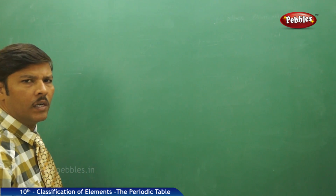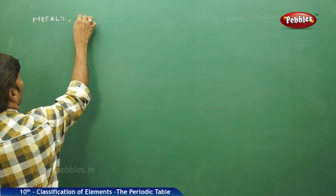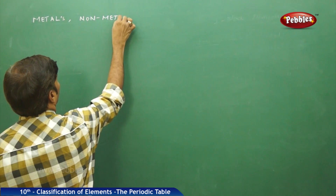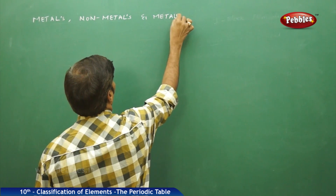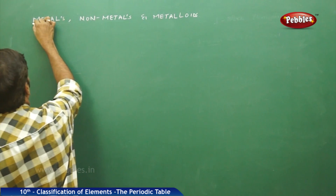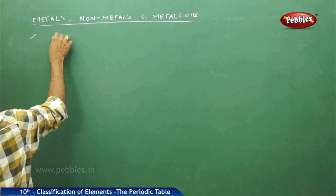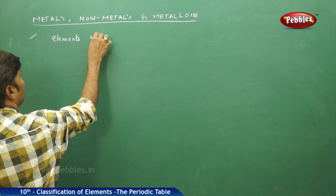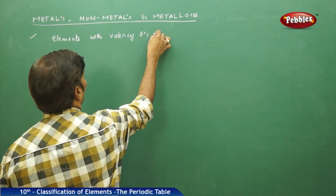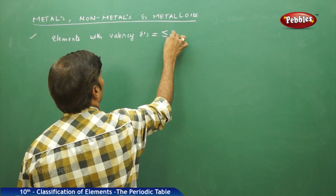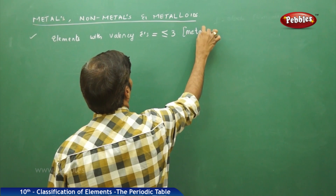The next topic under discussion is metals and nonmetals — and I am also adding one more term here, that is metalloids. If you go for metals, elements with valence electrons less than or equal to 3 are generally termed as metals.